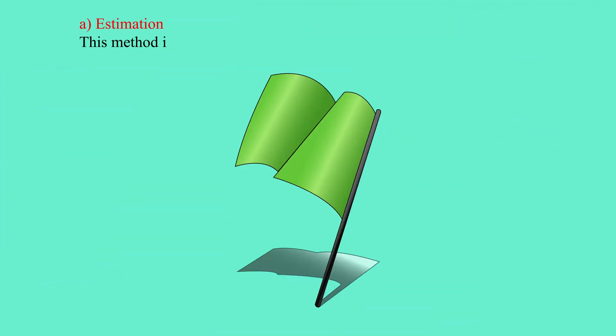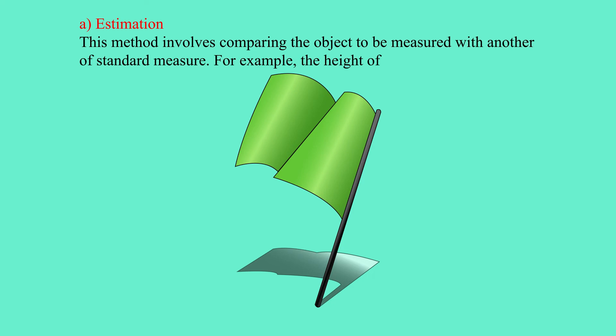Estimation: This method involves comparing the object to be measured with another of standard measure. For example, the height of a tall flag post can be compared with that of a wooden rod whose length is known.